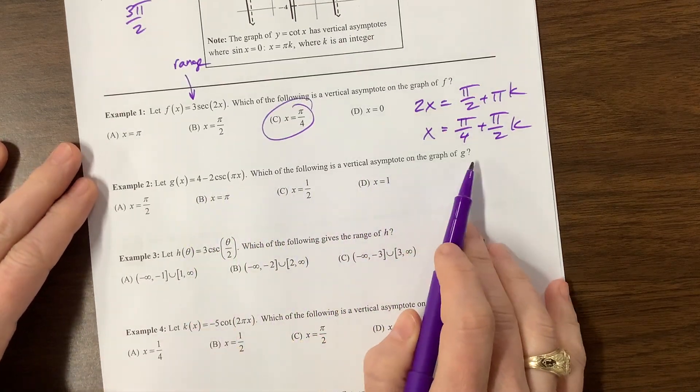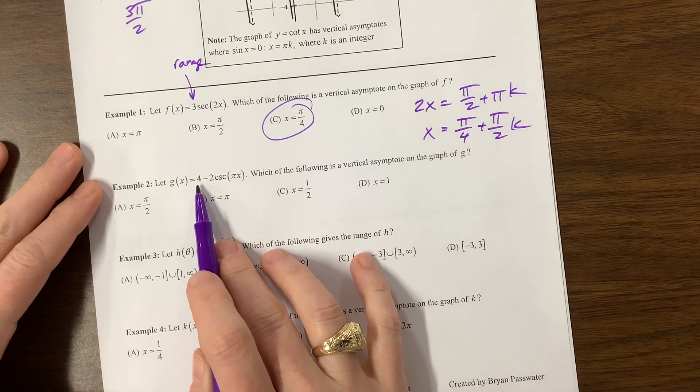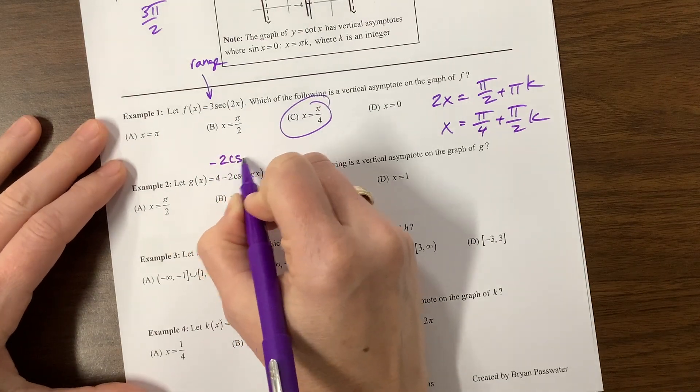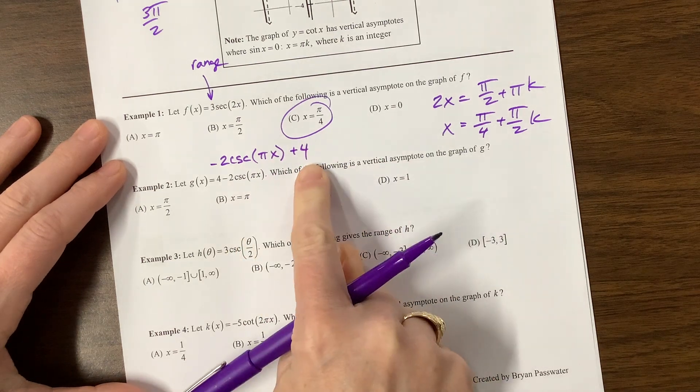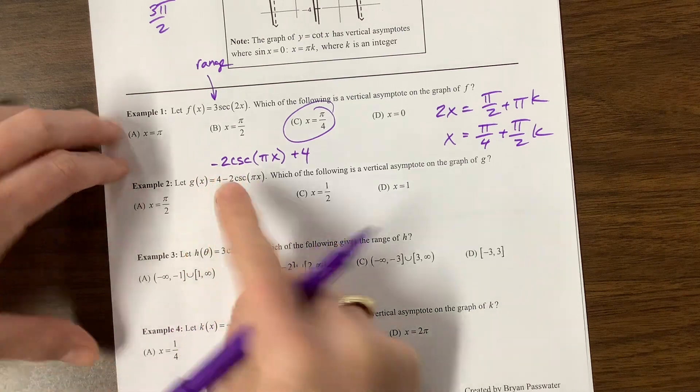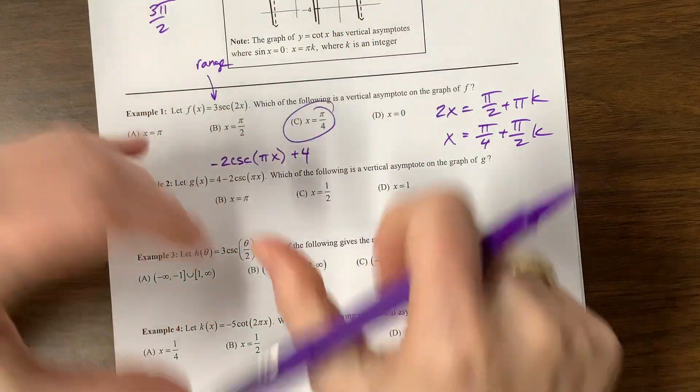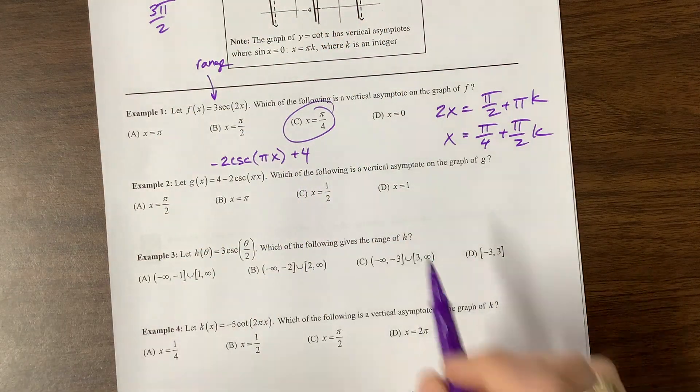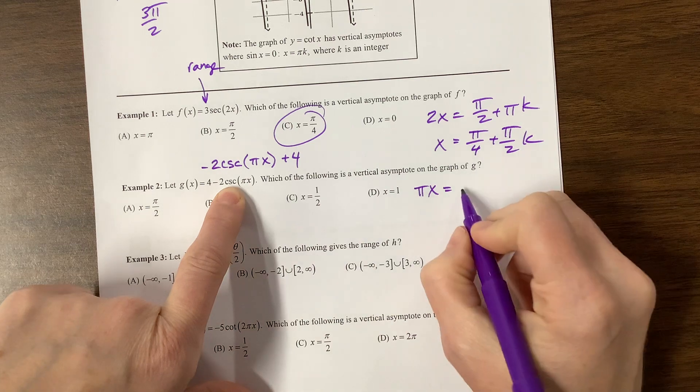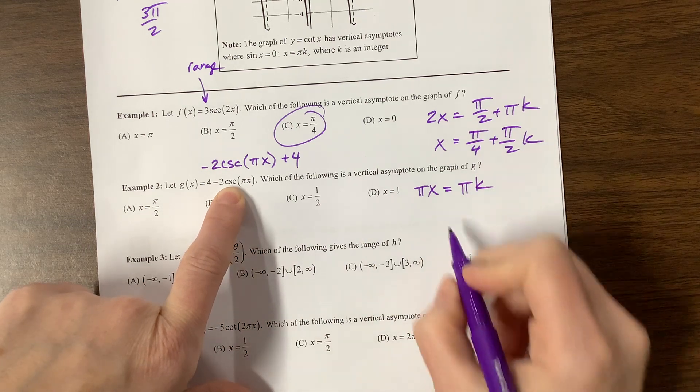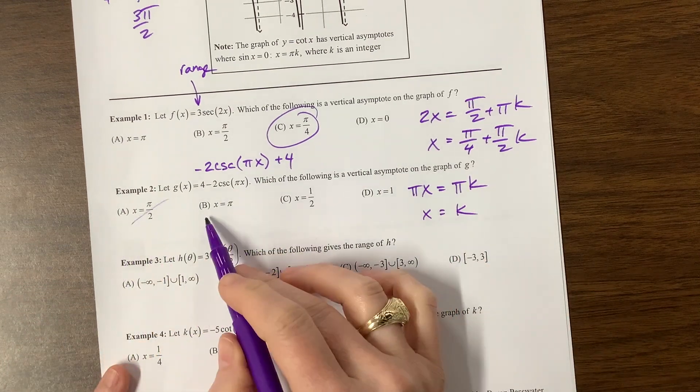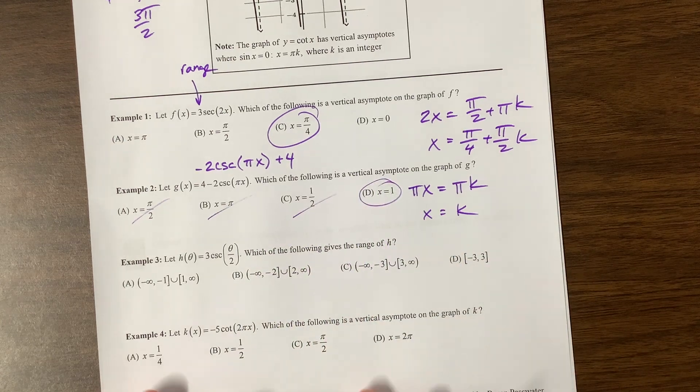Which of the following is a vertical asymptote? This is going to shift our graph up and down. The negative means that instead of being like this, we now have flipped. I'm going to take this and say pi x is equal to where does cosecant usually have asymptotes? At pi k. Now I can divide both sides by pi and I get that x is equal to k. So this would be any integer: one, two, three, et cetera. So not an integer, not an integer, not an integer. Here we go.